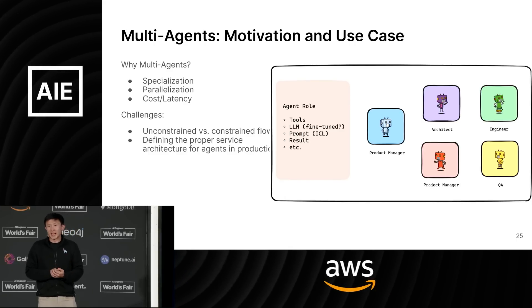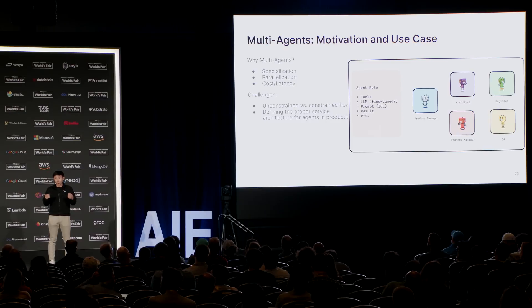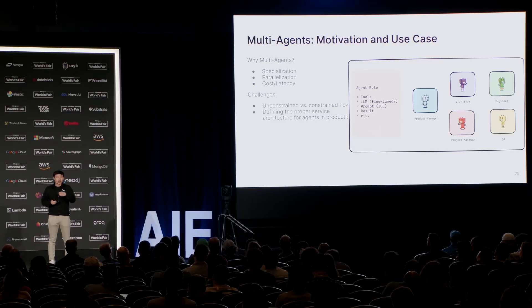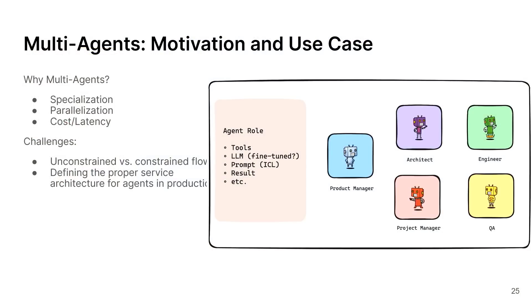There are fantastic multi-agent frameworks that have come out in the past few months, and many of you might be using or building your own. Some of the challenges in building this reliably in production include: one, being able to either let agents operate amongst themselves in an unconstrained flow, or actually injecting constraints between agents so you're explicitly forcing an agent to operate in a certain way given a certain input. The second challenge is that currently the bulk of agents are implemented as functions in a Jupyter notebook, and we need to think about defining the proper service architecture for agents in production.